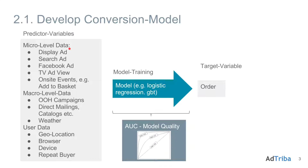The marketing touchpoints could for example be display banner ad views, a regular paid search click, information on whether a user visited the advertiser's website after a TV spot, or add to basket events. It could also be macro-level data — for example whether an out-of-home campaign ran or catalogs have been sent out during the customer's journey. Information about the user can also be integrated, such as geolocation or whether the user has purchased a product before. All that information can be inputted into that model and a conversion probability will be the output.